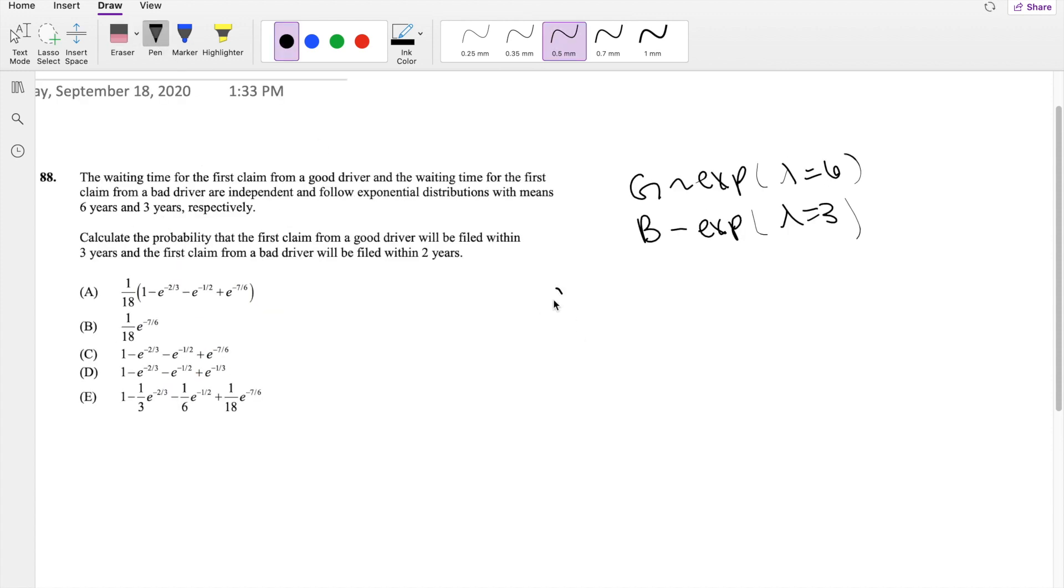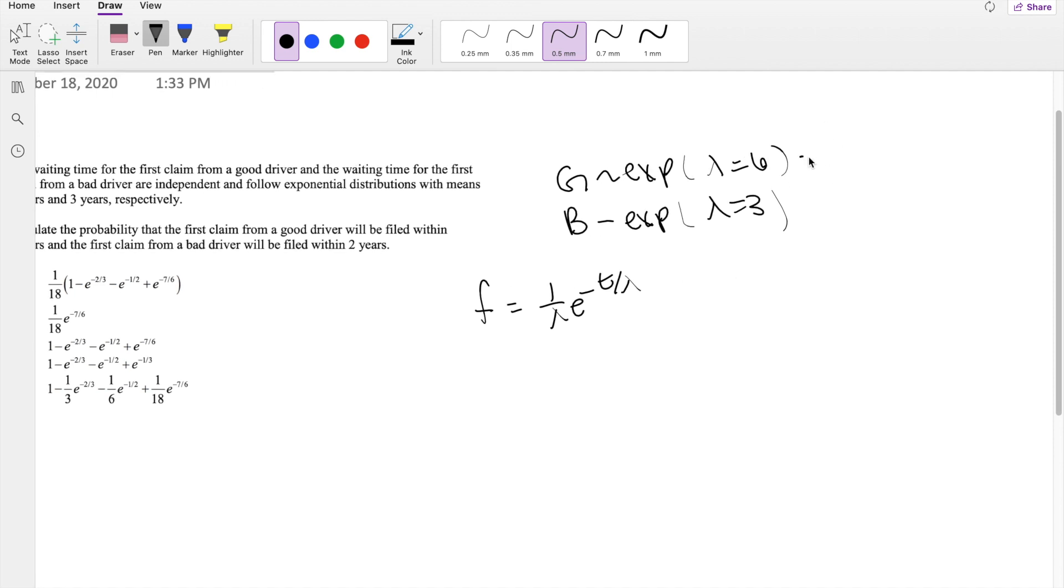We know for exponential function, the probability distribution function is equal to 1 over lambda e to the negative t over lambda. So for g, it must be equal to 1 over 6 e to the negative g over 6.